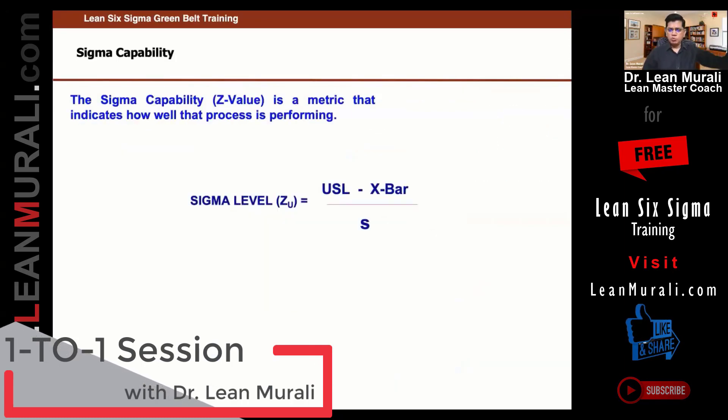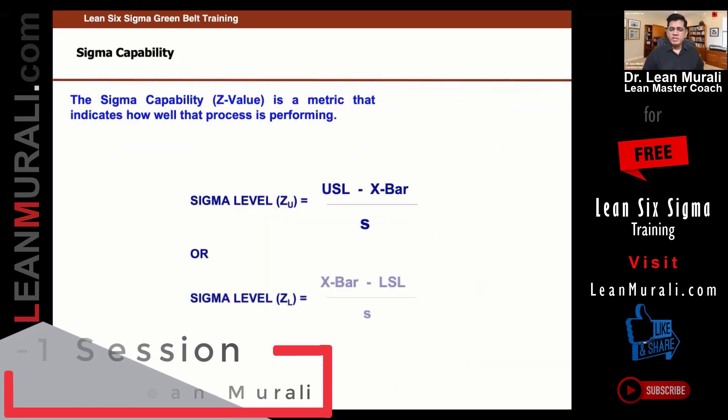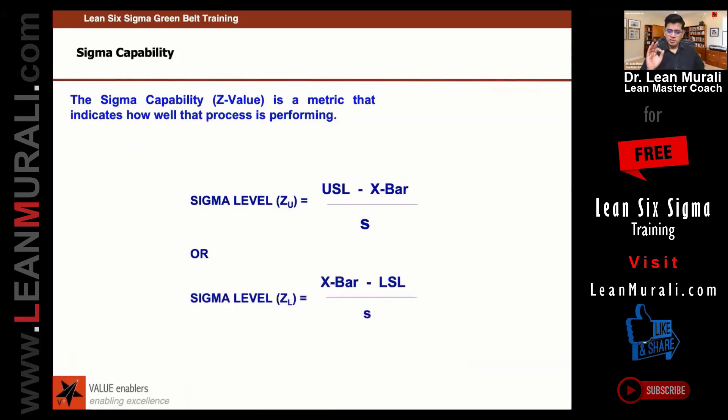Now, this is what you need to understand: there's something called specification limit, which is decided by the customer. For example, if my biscuit should be 25 grams in weight—the customer wants—or the soap should be 50 grams, you want it to be plus or minus 1 gram maybe. Suppose you're buying 5 grams of gold. What specification do you expect? Can you get exactly 5 grams of gold? No, it's not possible.